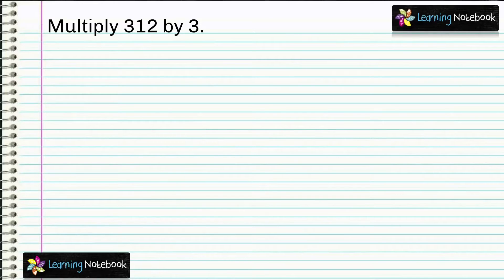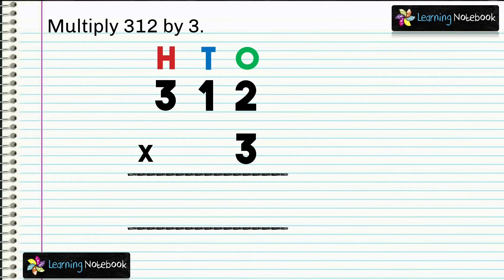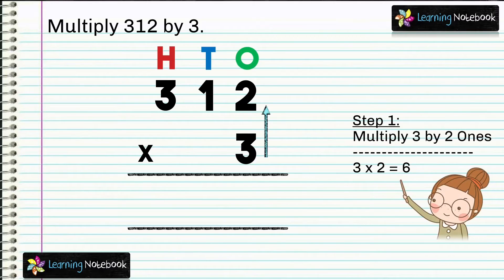So let's multiply. To multiply, first we need to write the numbers in column as shown here. Now we will multiply it in three steps. In step 1, multiply 3 by 2 ones. That is, 3 into 2 equals to 6.